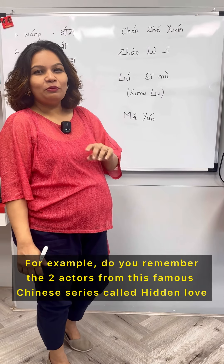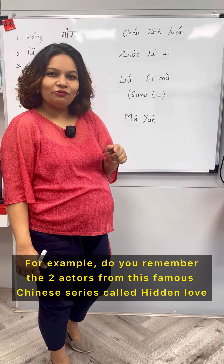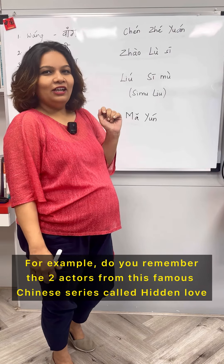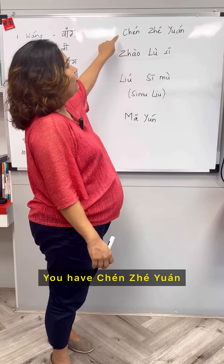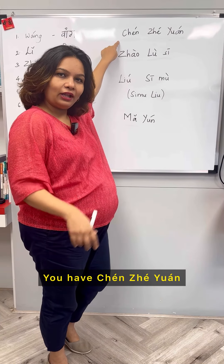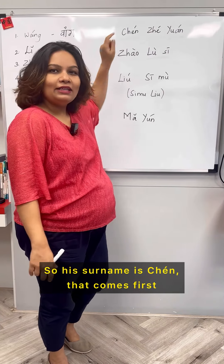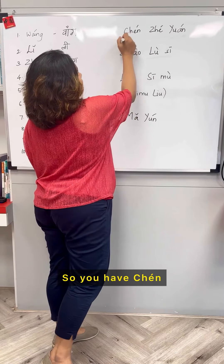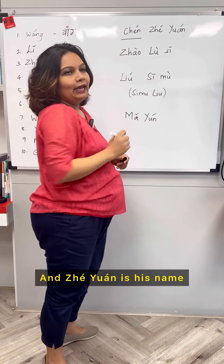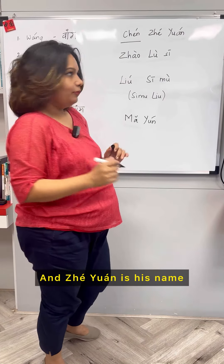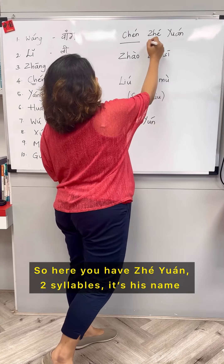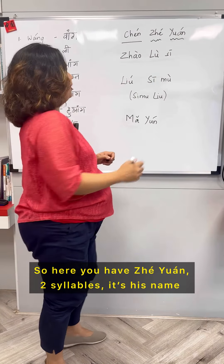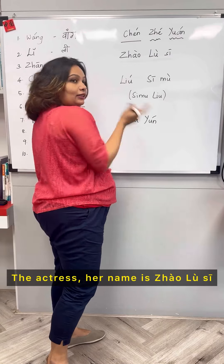For example, do you remember the two actors from the famous Chinese series called Hidden Love? You have Chen Cheyuan — his surname is Chen, which comes first, and Cheyuan is his given name, which is two syllables.